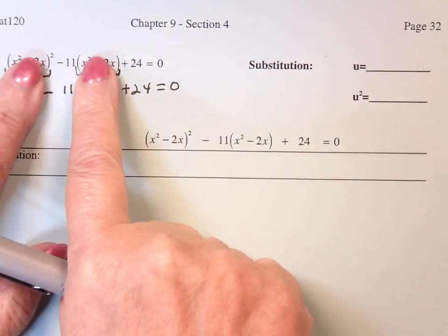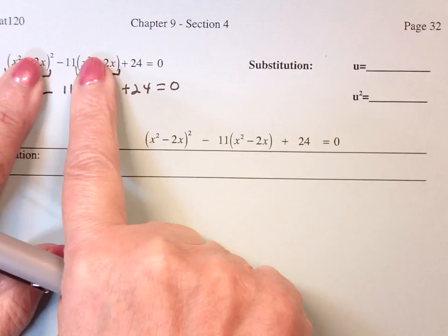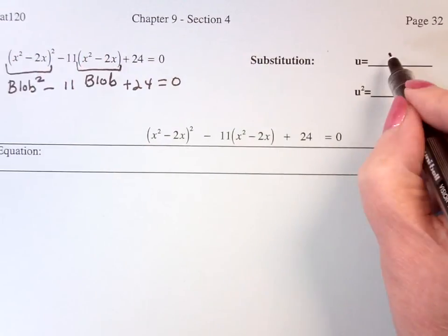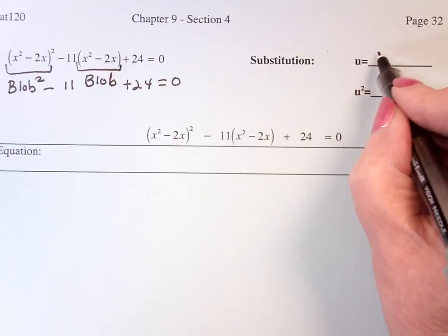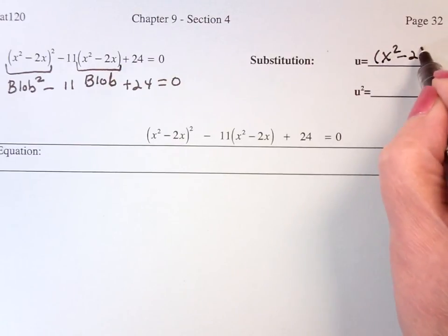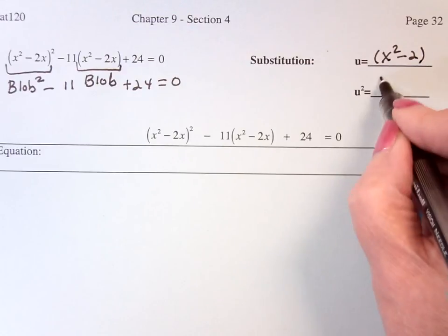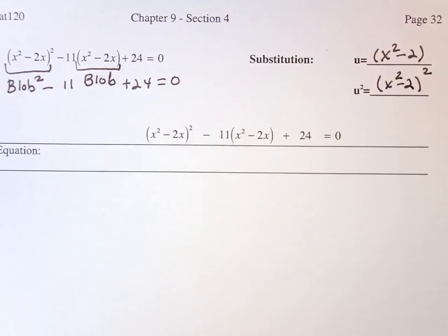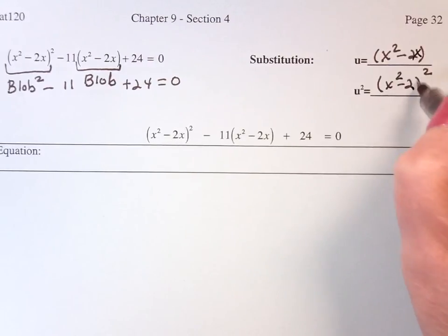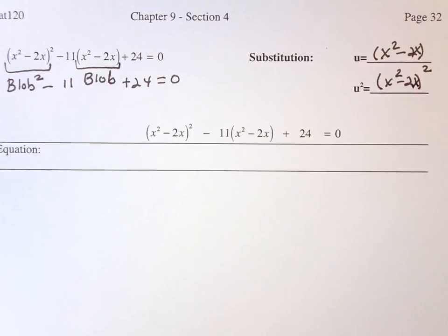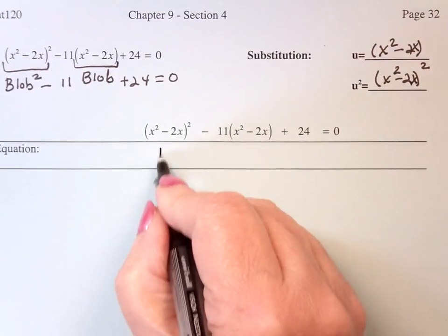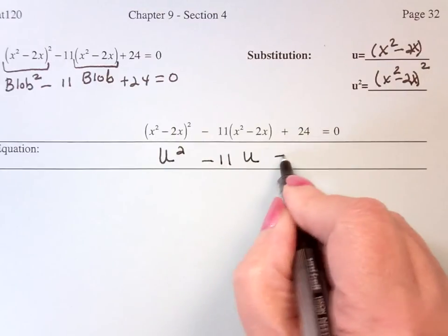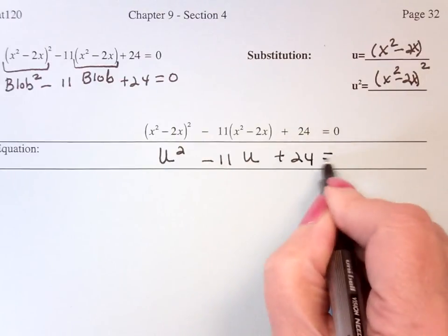So it's the pattern, something squared minus 11 times something plus 24. It's a quadratic equation. My blob is going to be x squared minus 2x. And then I'm going to square that thing, (x² - 2x)². So this is going to turn into the blob squared minus 11 times the blob plus 24 equals 0.